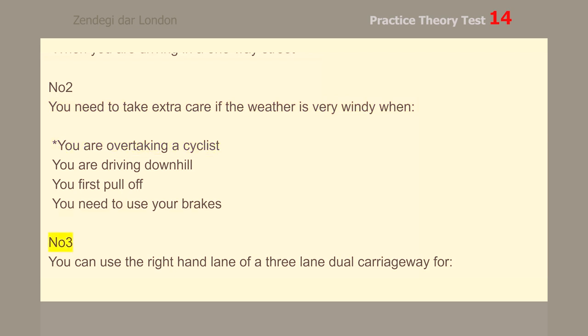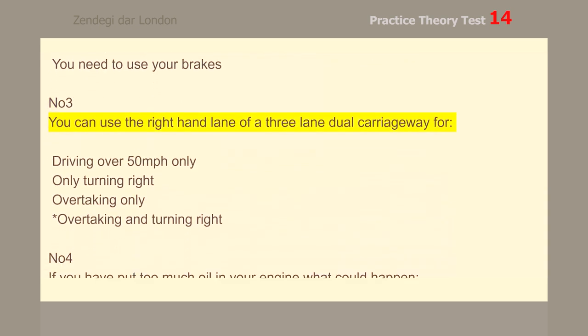You can use the right-hand lane of a three-lane dual carriageway for overtaking and turning right.